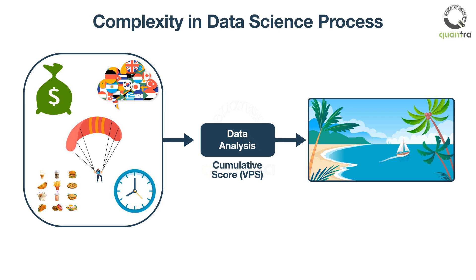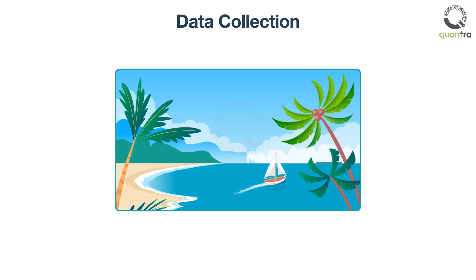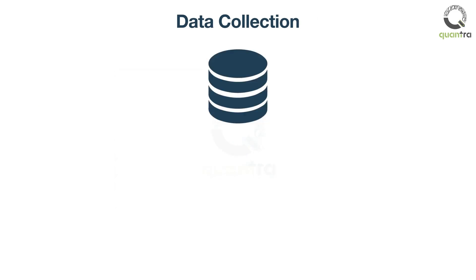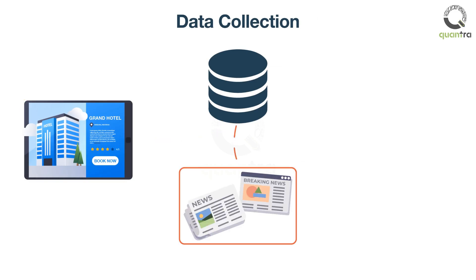The complexity lies in collecting relevant data for all these locations — cleaning it, quantifying it, and calculating VPS. A location can be cheap or expensive based on average one-night hotel rate. This data can be downloaded from a hotel booking website. The political scenario can be found from news websites using natural language processing tools.